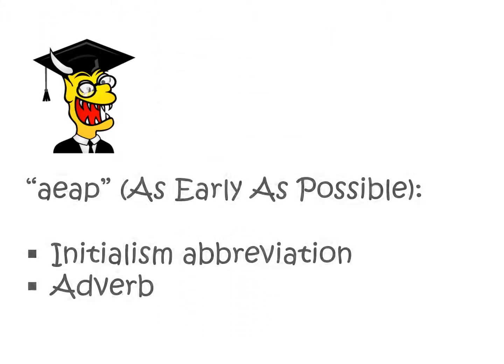Let's have a quick academic look at AEAP. It's an initialism abbreviation — that means each of the letters represents a word. It's also used as an adverb. In fact, it's an adverbial phrase and can be further classified as an adverb of time, so it tells you when something is going to happen.